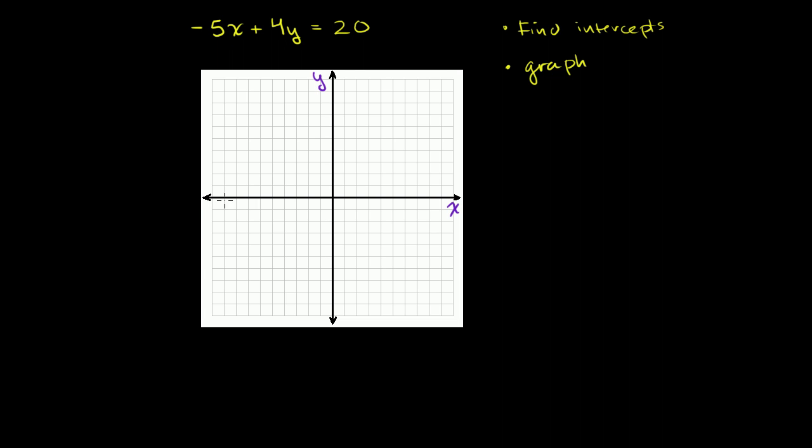And when I intersect the x-axis, what's going on? What is my y-value when I'm at the x-axis? My y-value is 0. I'm not above or below the x-axis. So the x-intercept is when y is equal to 0.